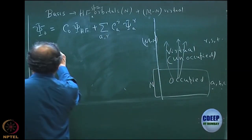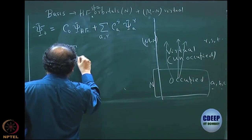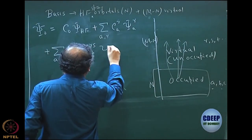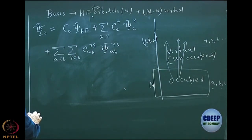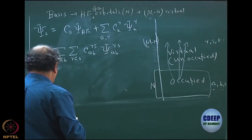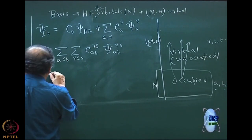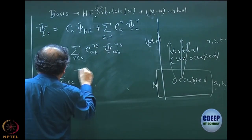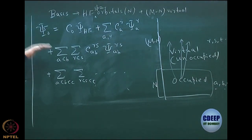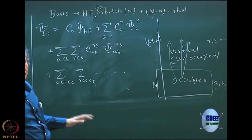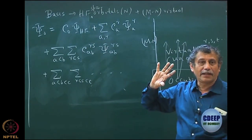Similarly, you have the doubly excited term: sum over a < b, r < s of cₐᵦᵣₛ ψₐᵦᵣₛ — a doubly excited determinant generated from Hartree-Fock by the two-electron change from a, b to r, s. You can then continue to triply excited and so on — r, s, t and further. If you keep writing up to all n electrons excited, the maximum degree of excitation is n-tuply excited. The degree of excitation is finite because we have a finite particle system: you can only excite n electrons, but you can excite to as many orbitals as possible.